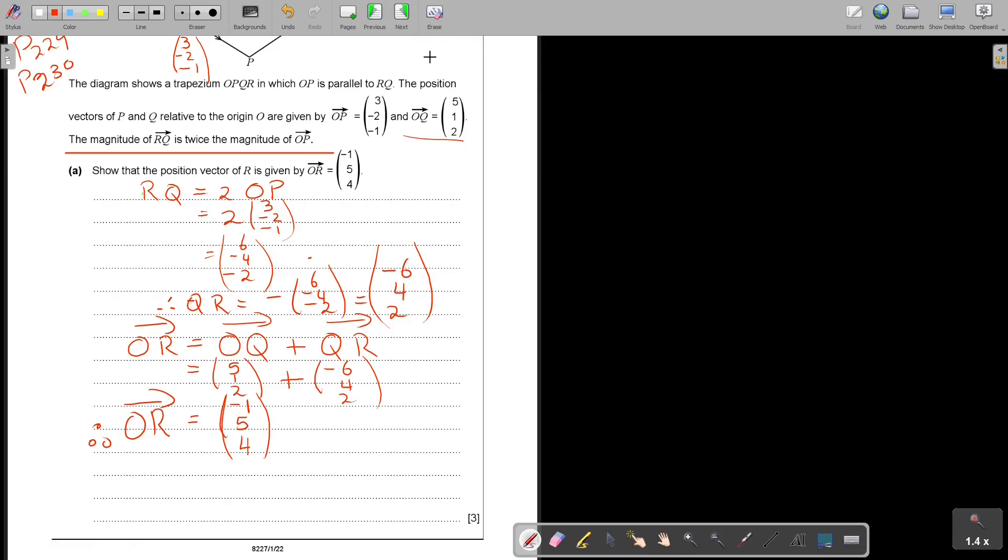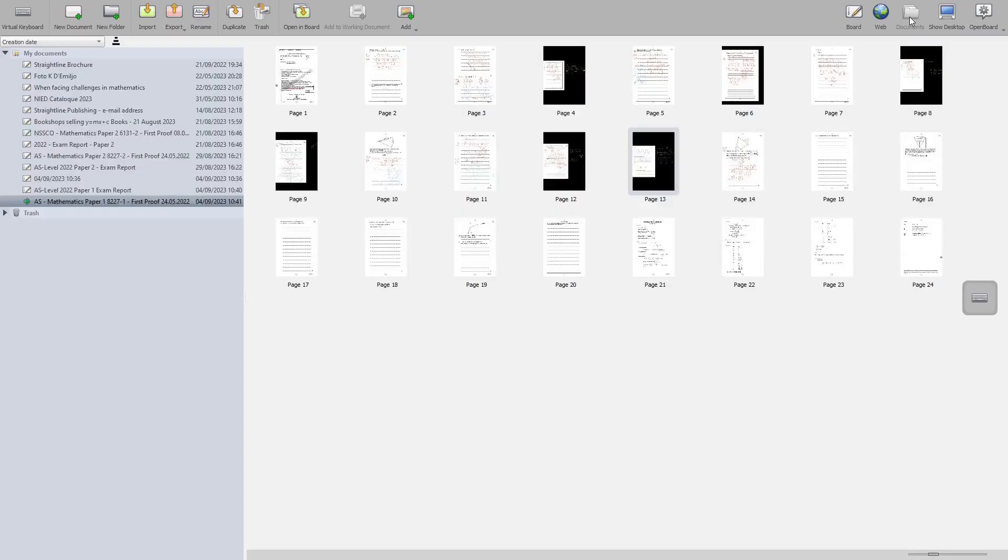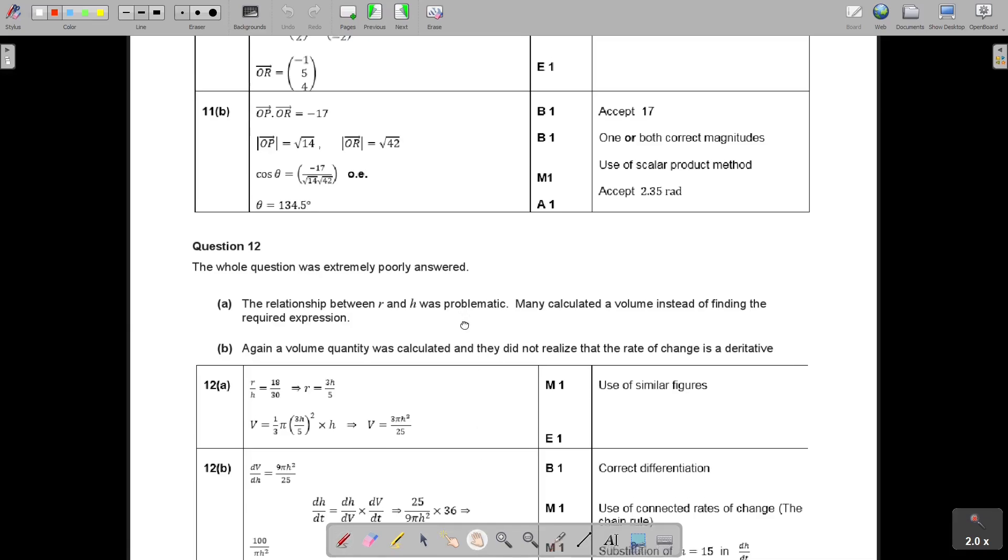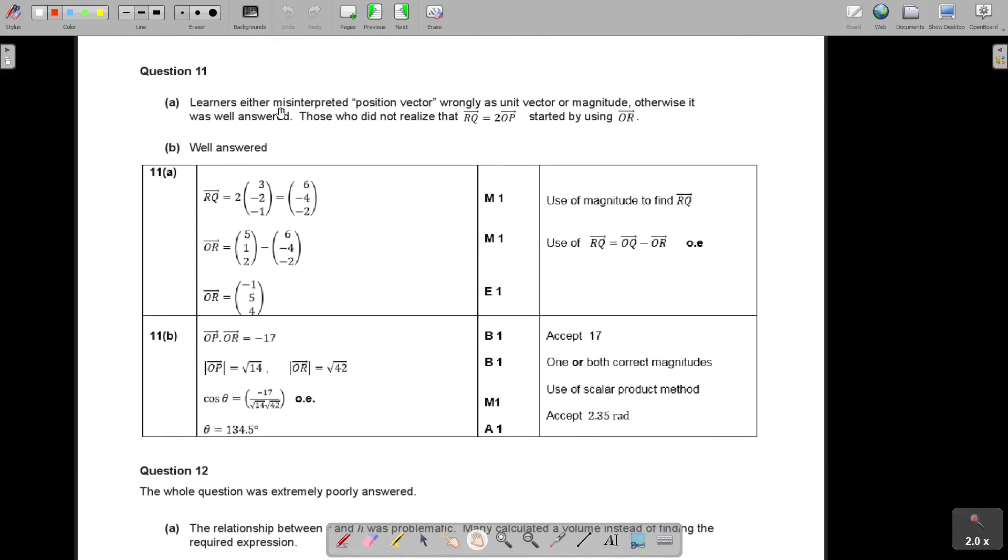Let's go to the next one. I think let's go to the exam report, because the next one is going to be a bit different. The exam report is not too long, so we can check quickly. Question 11. Maybe just read what they say. Learners either misinterpret position vector wrongly as unit vector. No. Position vector is from the origin. Unit vector is a magnitude of 1. Otherwise it was well answered. Those who did not realize that RQ2 started by using OR.